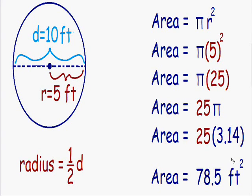So the approximate area of this circle is equal to seventy-eight point five square feet.